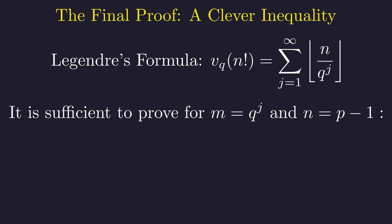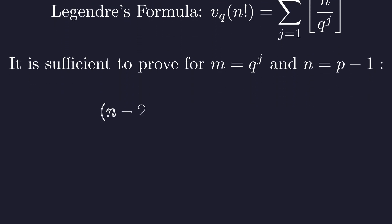Don't worry about that infinite sum—only finitely many terms are actually non-zero. After all the algebra settles, our problem reduces to proving this inequality for each power of q. Let me set m equals q to the j and n equals p minus 1, and then we need to show this.